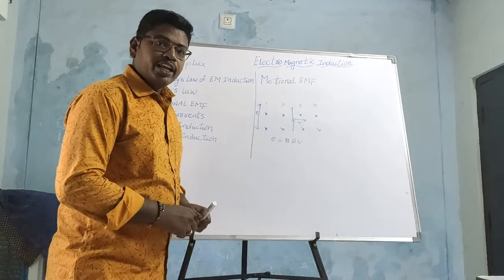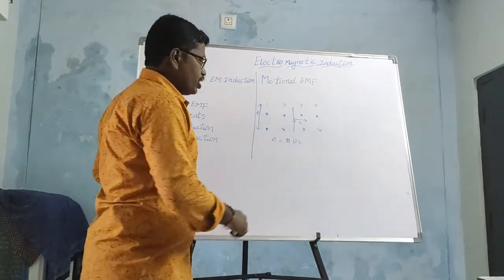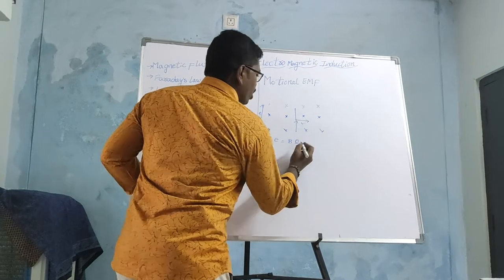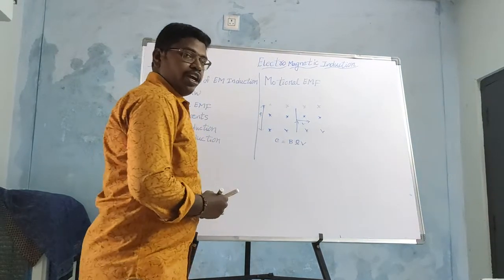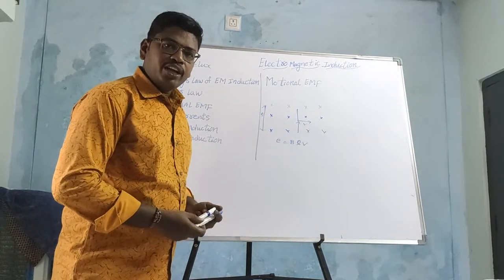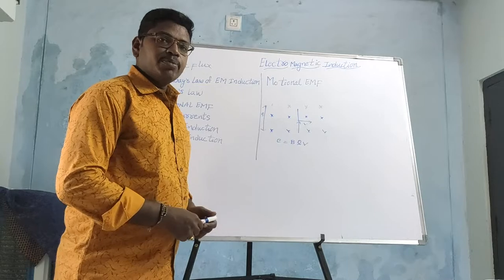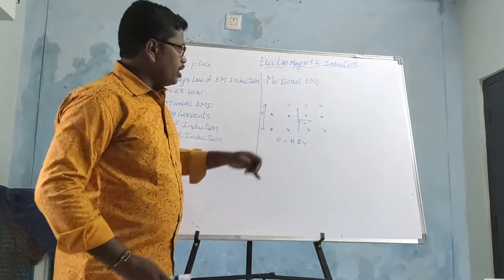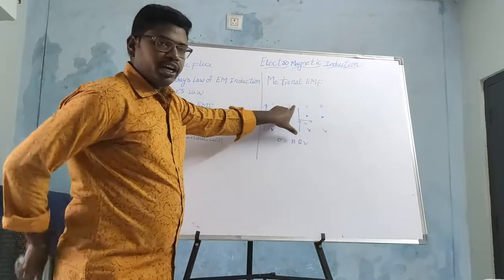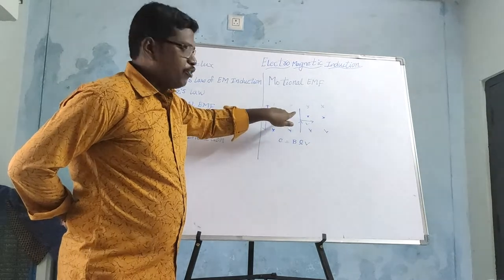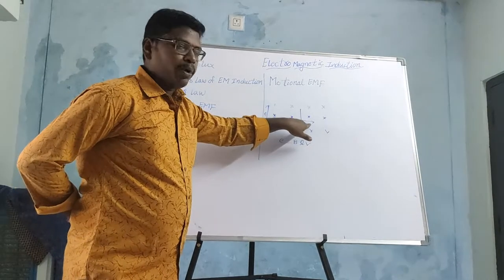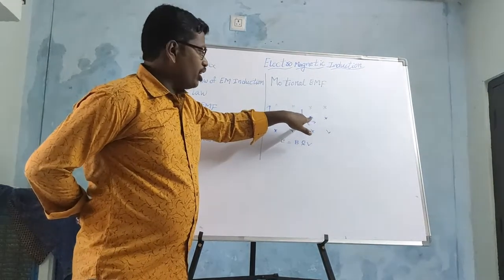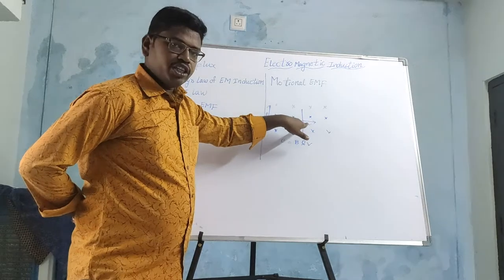What is BLV? B is the magnetic field, L is the length, and V is the velocity of the conductor. It means if a conductor is kept in a magnetic field and moving perpendicular to the magnetic field with velocity V, then the induced EMF across the ends of the conductor is E = BLV.